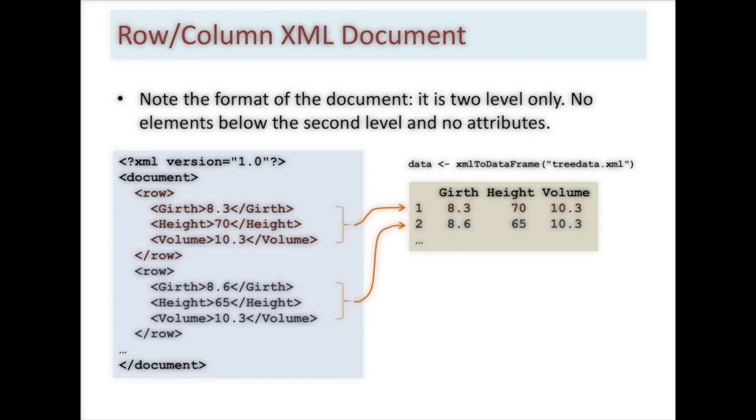It's row, girth, height, volume, row, girth, height, volume, and so on. Also note that the child nodes underneath row are always in the same order. It's girth, height, followed by volume. They're never in any other order. This requires that it has that particular type of structure.